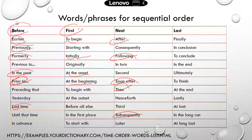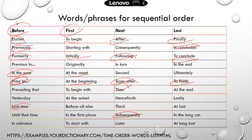And then for things that happened last: finally, in conclusion, in the end, to finish. So you can go through these words and phrases and get familiar with what they mean so that you can recognize them when you read a paragraph.